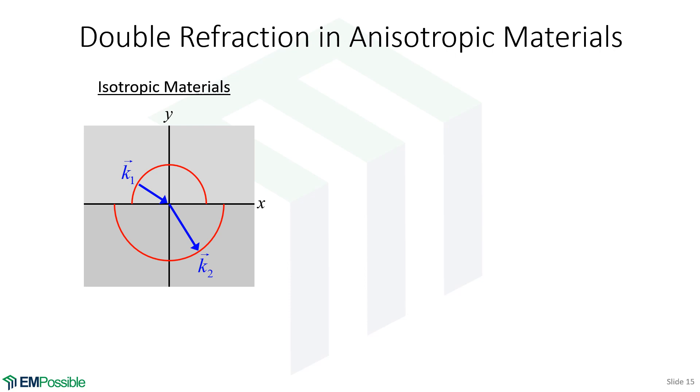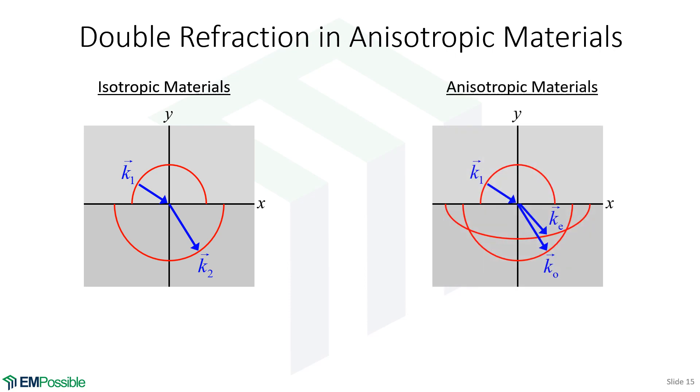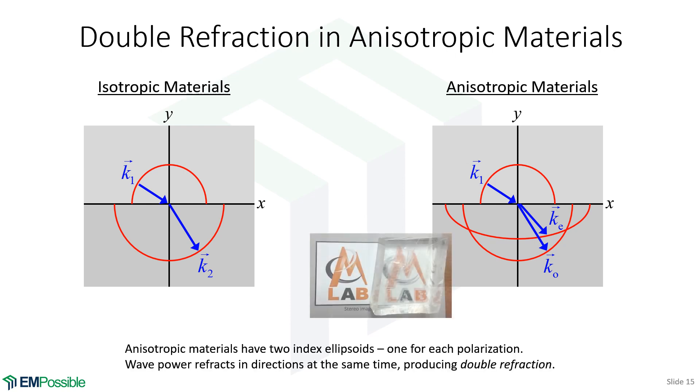Remember, these anisotropic mediums actually had two index ellipsoids at the same time. Well, it turns out since there's two index ellipsoids, there's actually two possible directions that the light might go or the electromagnetic wave might go. And this happens. This is called double refraction. And what I'm showing here is a big chunk of optical quartz. The surfaces aren't polished real well, but you get the idea. We actually see two EM Lab logos in the background. That's not a silly blurring effect. That double refraction happening because that crystal is anisotropic. There's two different refractive indices at the same time.